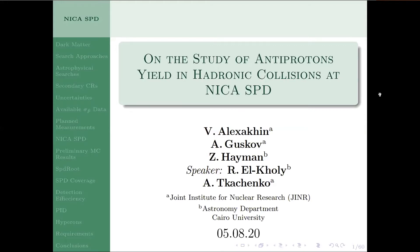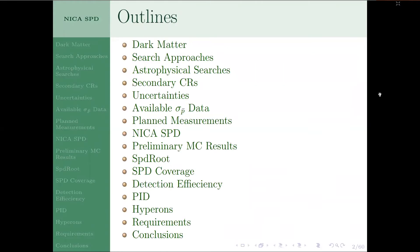We're going to start with an introduction about dark matter, different models of dark matter, and the search approaches applied to try and find its identity. We'll focus on astrophysical searches and how they relate to cosmic rays and uncertainties surrounding the observations. Then we'll explore the currently available data and what we can expect in the upcoming years. Then we revisit our Monte Carlo studies from two years ago about how the NICA SPD detector can contribute to the indirect detection of dark matter, and we will preview our recent study using the SPDroot package, which is software more specific to the SPD setup.